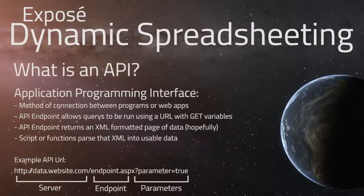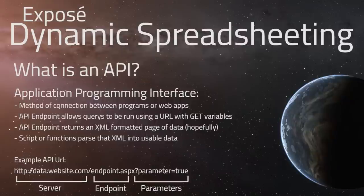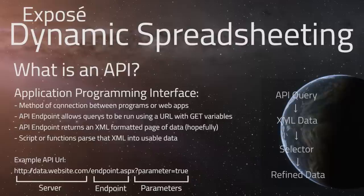What is an API? API stands for Application Programming Interface. This is technically the method by which websites interact with one another. The API is an automated interface by which you can query a database or a server. You provide it input commands or parameters, and it sends you back data directly from its databases or server.